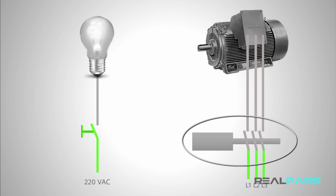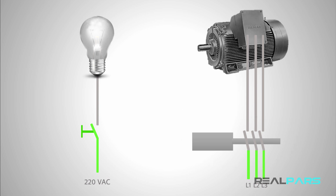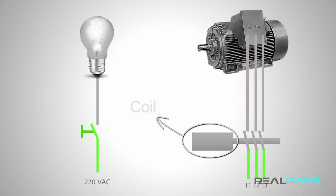This switch is similar to what you used for the lamp, but there is a small difference. The difference is that this is an industrial switch. We call this industrial switch a contactor. A contactor is composed of two main parts: coil or electromagnet, and contacts.